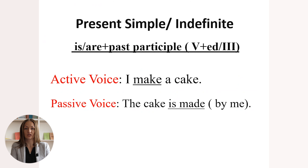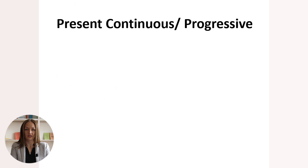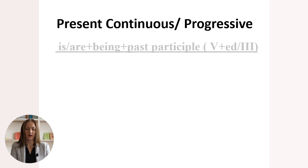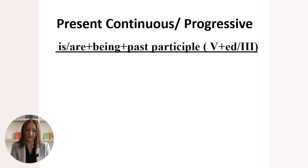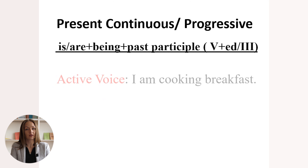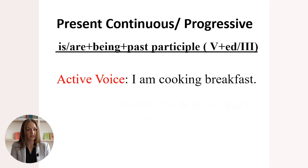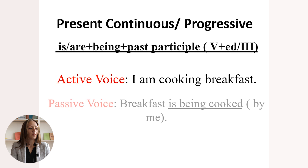The next grammar tense is present continuous, also called present progressive. To form it in passive voice, we use 'is' or 'are' plus 'being' plus the past participle of the meaningful verb — the '-ed' ending for regular verbs or the third column for irregular ones. Active voice: 'I'm cooking breakfast.' In passive voice: 'Breakfast is being cooked by me.'